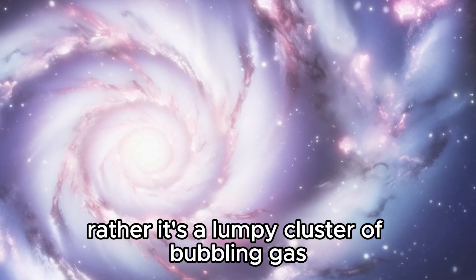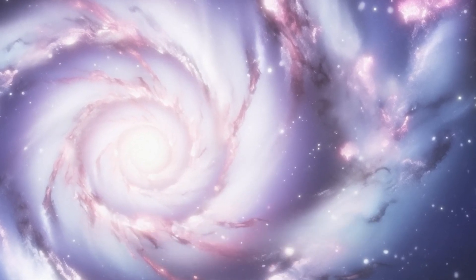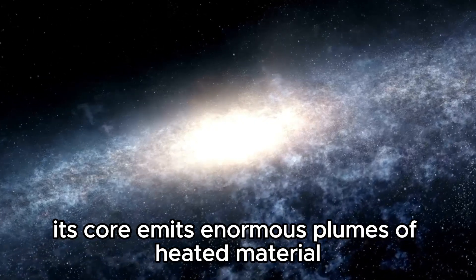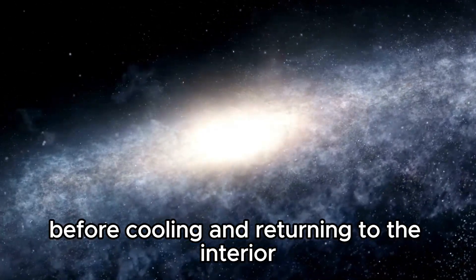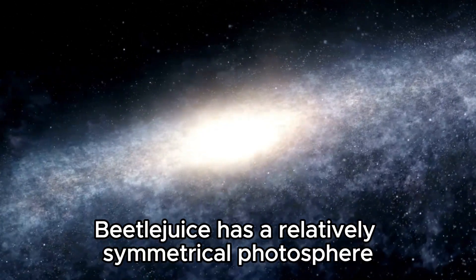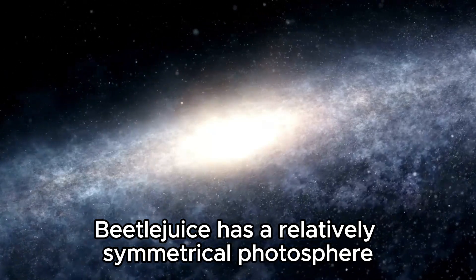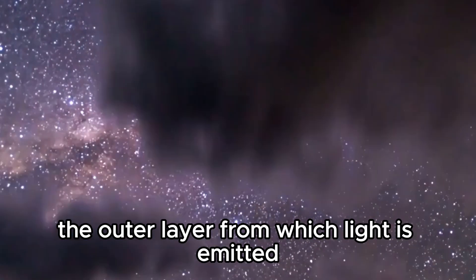Rather, it's a lumpy cluster of bubbling gas. Its core emits enormous plumes of heated material that rise to the surface before cooling and returning to the interior. Betelgeuse has a relatively symmetrical photosphere, the outer layer from which light is emitted.